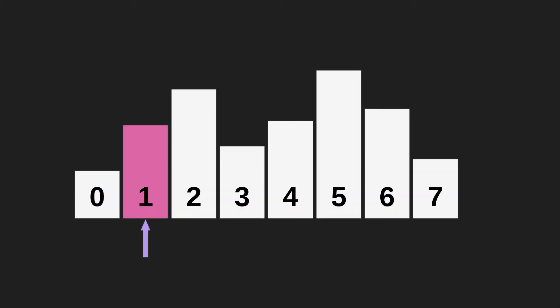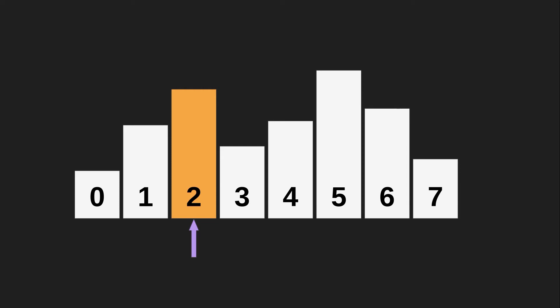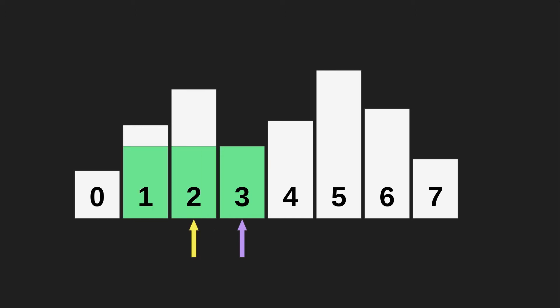Let's do it with bar number one. Bar zero is smaller, so we can't extend one into zero. But we can extend it into bar two because it's taller. Bar three is smaller than bar one, so we stop there. For bar two, it's higher than all its neighbors, so nothing to do. For bar three, it's smaller than bars one and two, so we can extend bar three into bars one, two, and also into four, five, and six — building more rectangles.